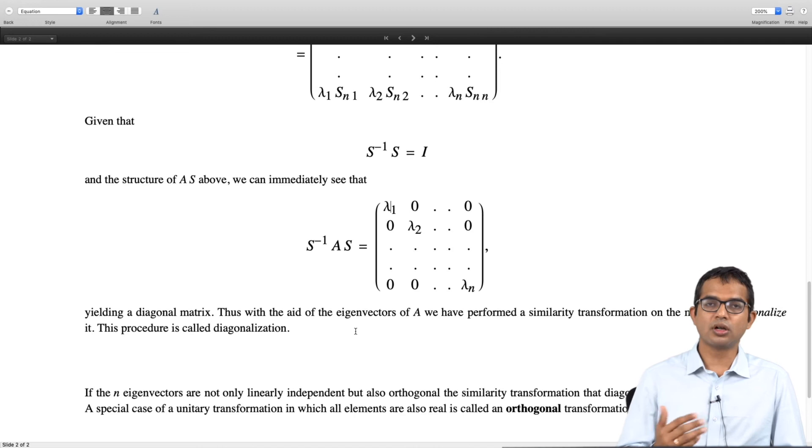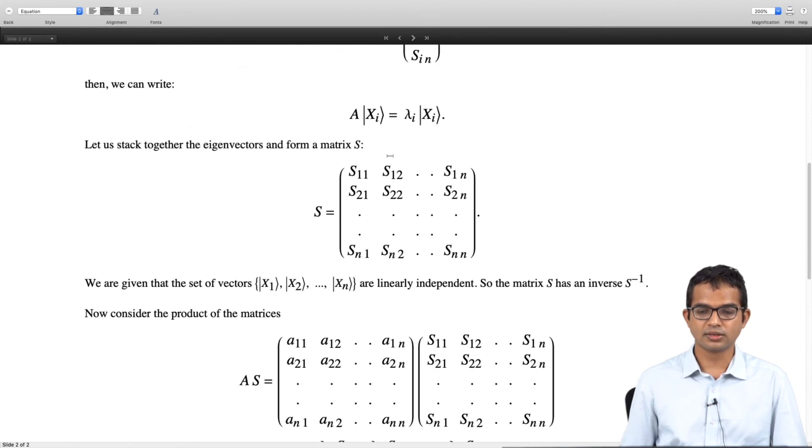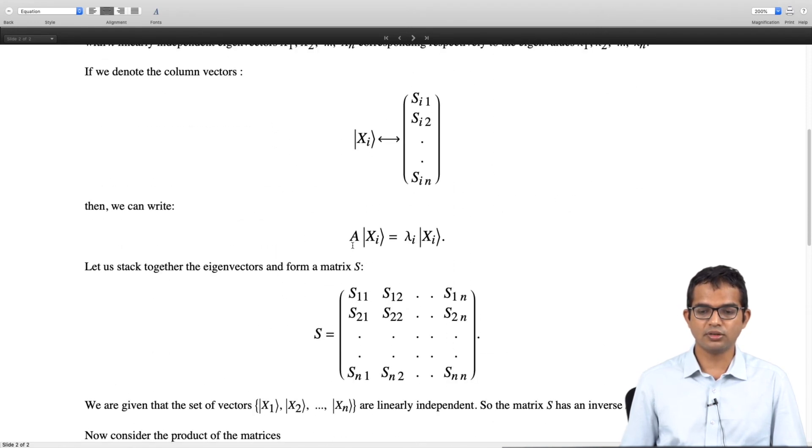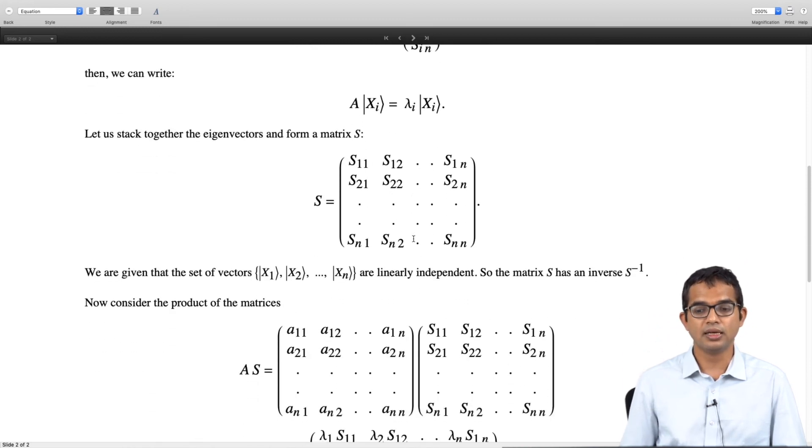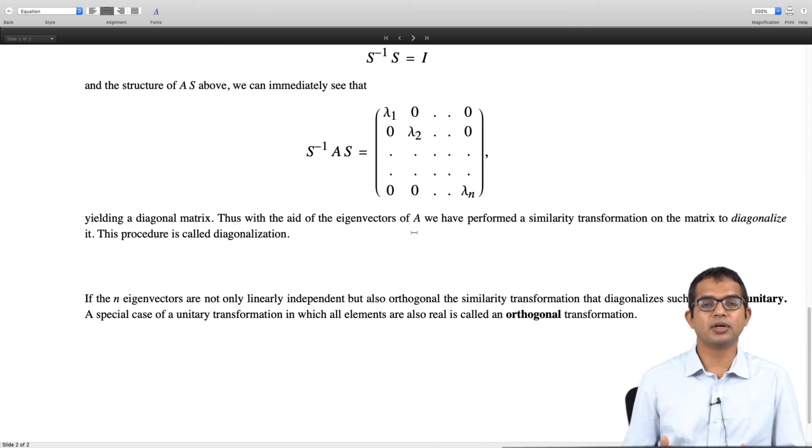So we have talked a lot about unitary matrices. So if your eigenvectors are not only linearly independent but also orthogonal then in place of S inverse A S you will just have u dagger A u. So if in addition to A x_i giving you lambda x_i with all these x_i being linearly independent, there is a shorter class of matrices whose eigenvectors are not only linearly independent but they are also orthogonal to each other.